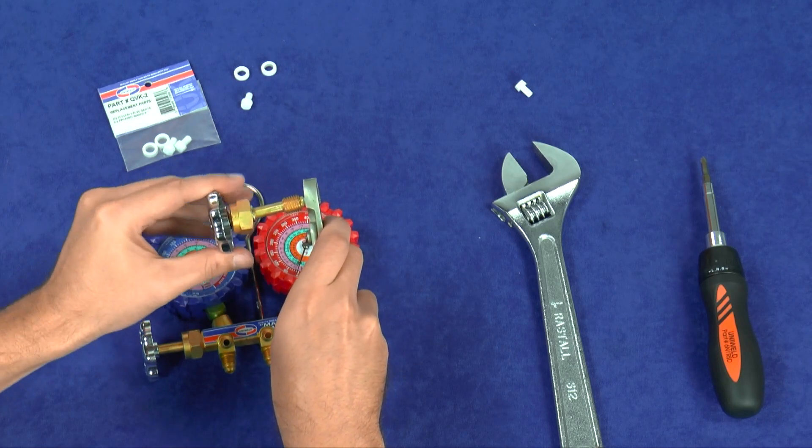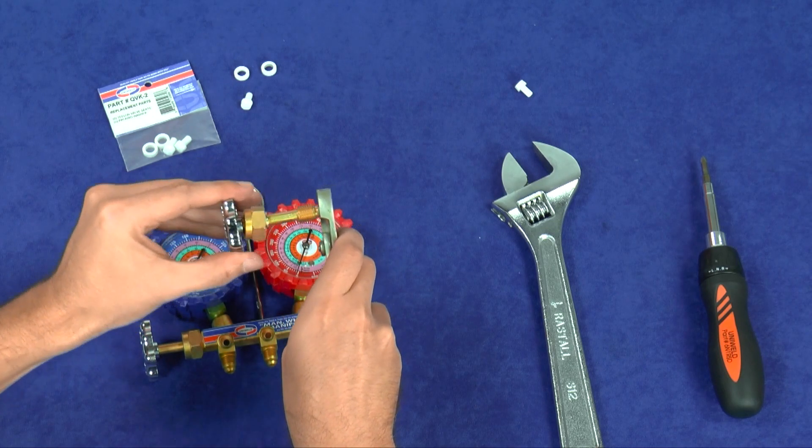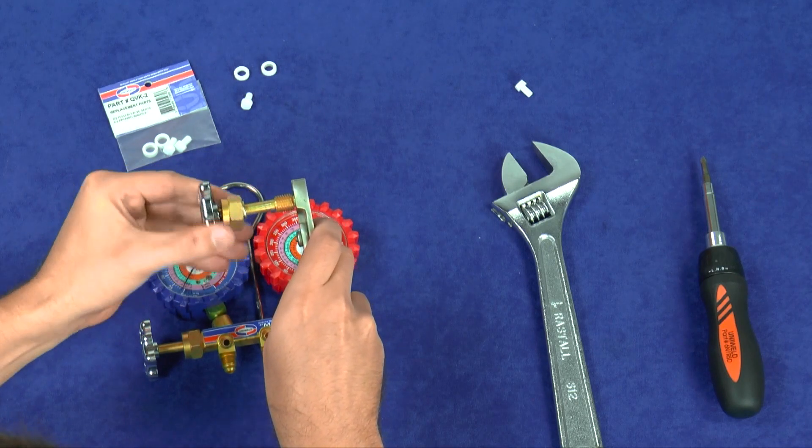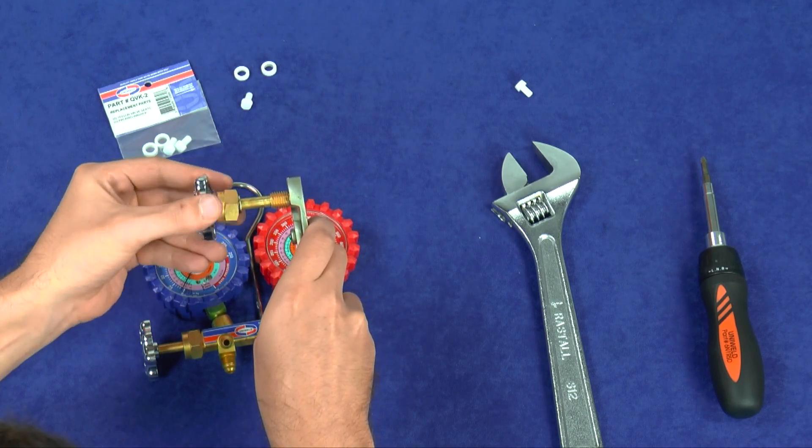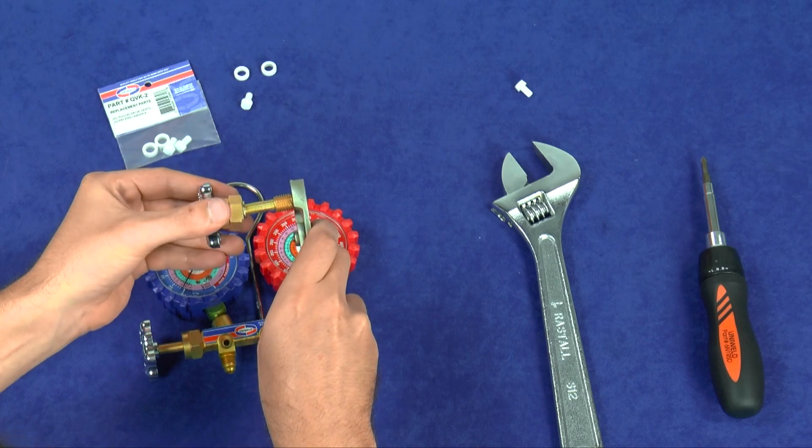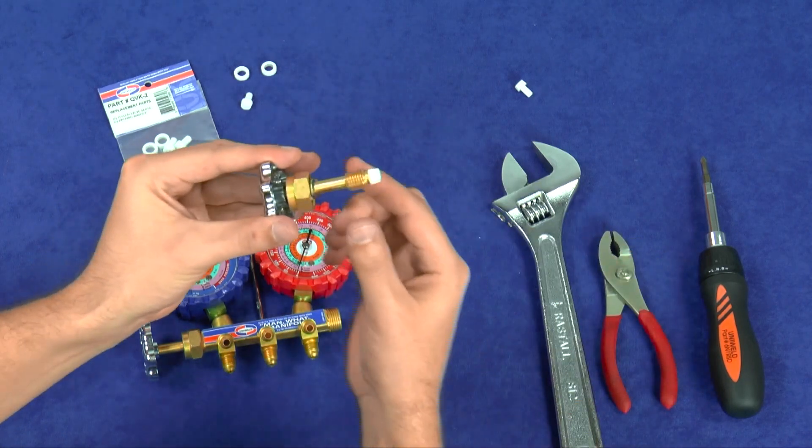When the Teflon is fully screwed in, it will not bottom out and stop rotating. Stop screwing in the Teflon seat once it is flush with the brass valve stem. If you continue to screw it in, the brass threads can strip the Teflon.